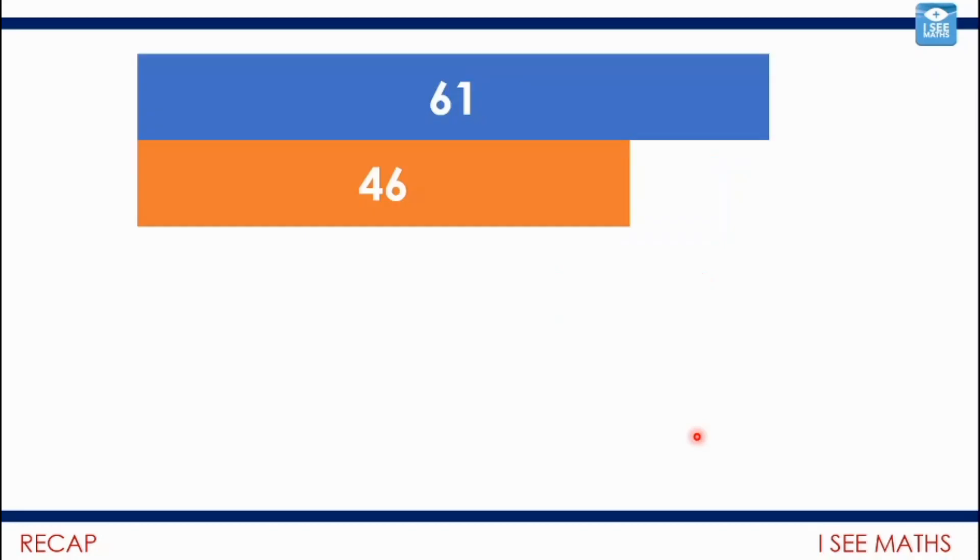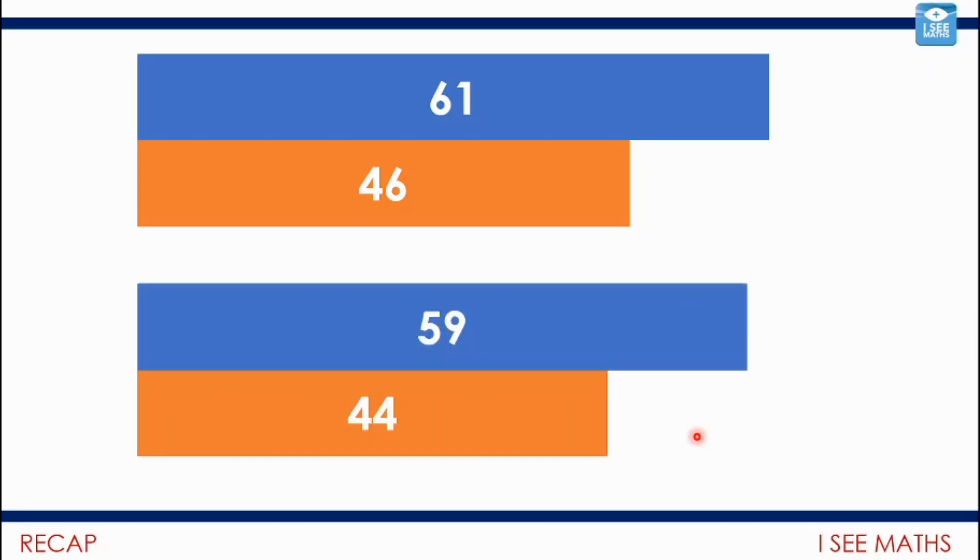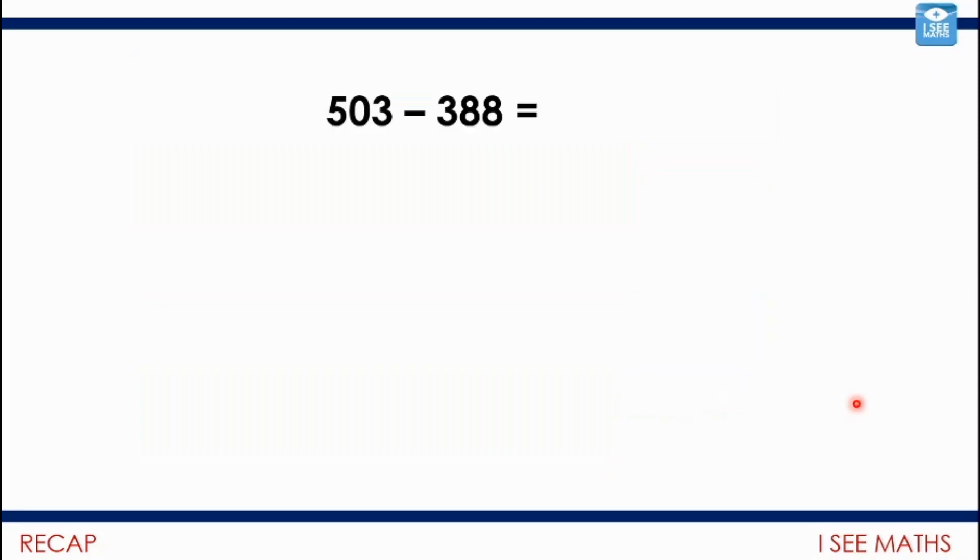So we looked at how we could use that for 61 subtract 46. The difference between 61 and 46, well that's the same as the difference between 59 and 44, and I think that's slightly easier to calculate. If I add 12 to both numbers, I have 515 subtract 400, so the answer to both questions is 115.